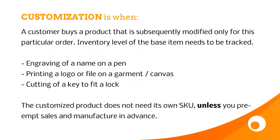The final concept is customization. This is where you have a base SKU that you do track stock of, and then you modify it on a per-order basis — for example, a pen with an engraving, uploading a file to print on a garment like a t-shirt or hoodie, a photo printed on a canvas, or cutting a key to fit a lock. These customizations don't need their own SKU because the products don't need to be stock tracked — only the base item is tracked. Unless you're pre-building or pre-cutting items before the sale, in which case you'd need a separate SKU for each customization.